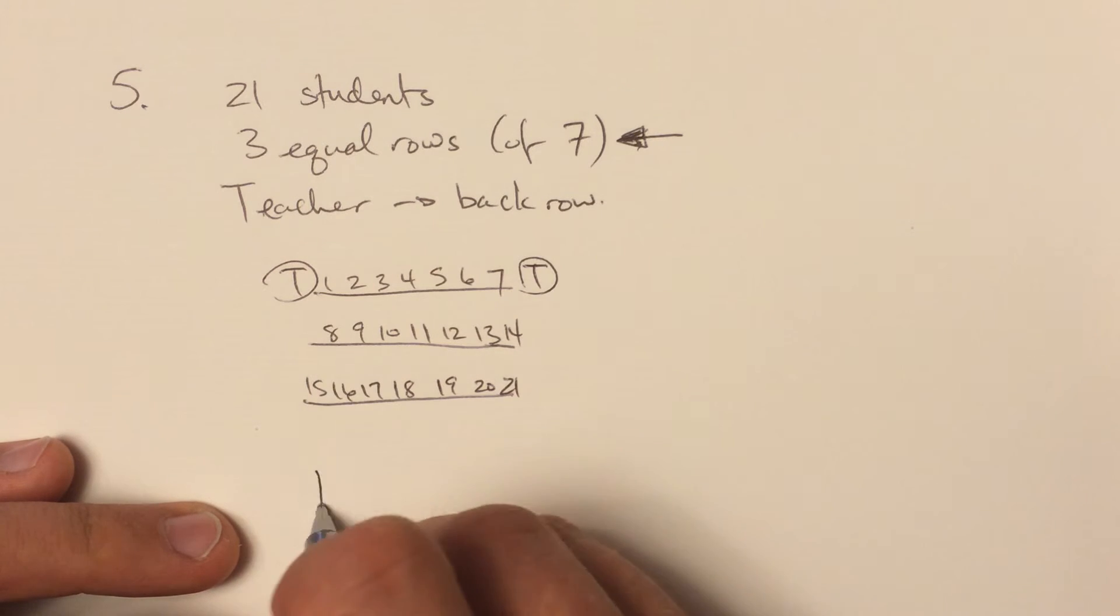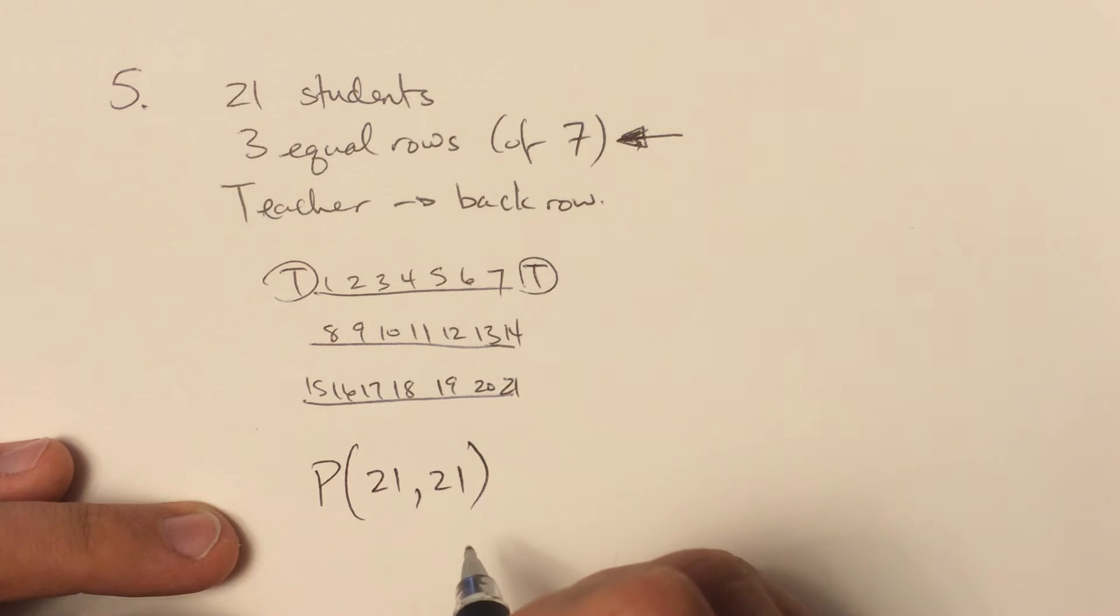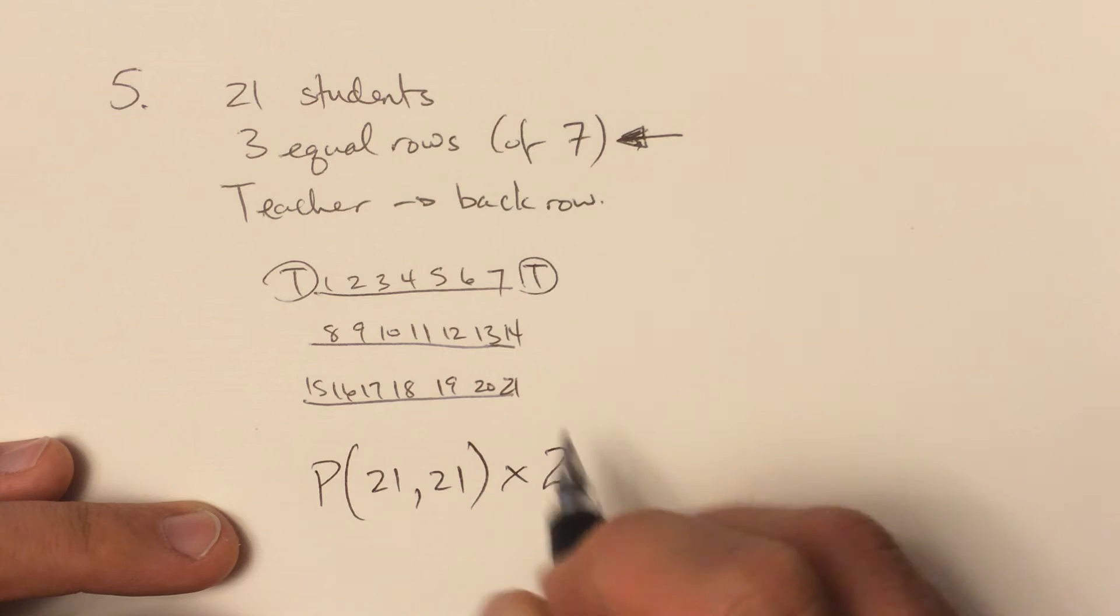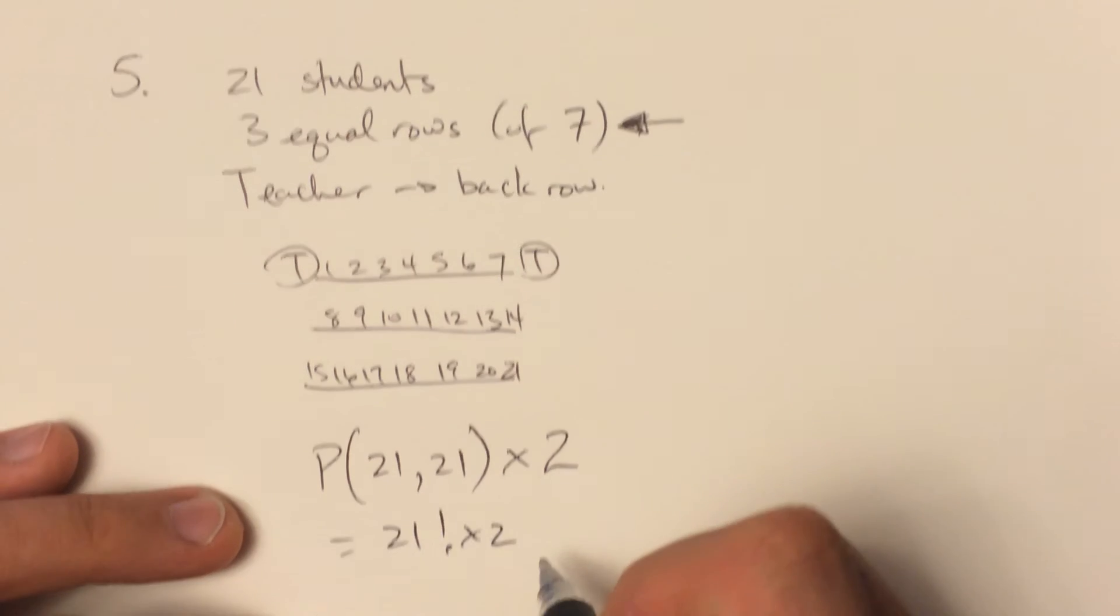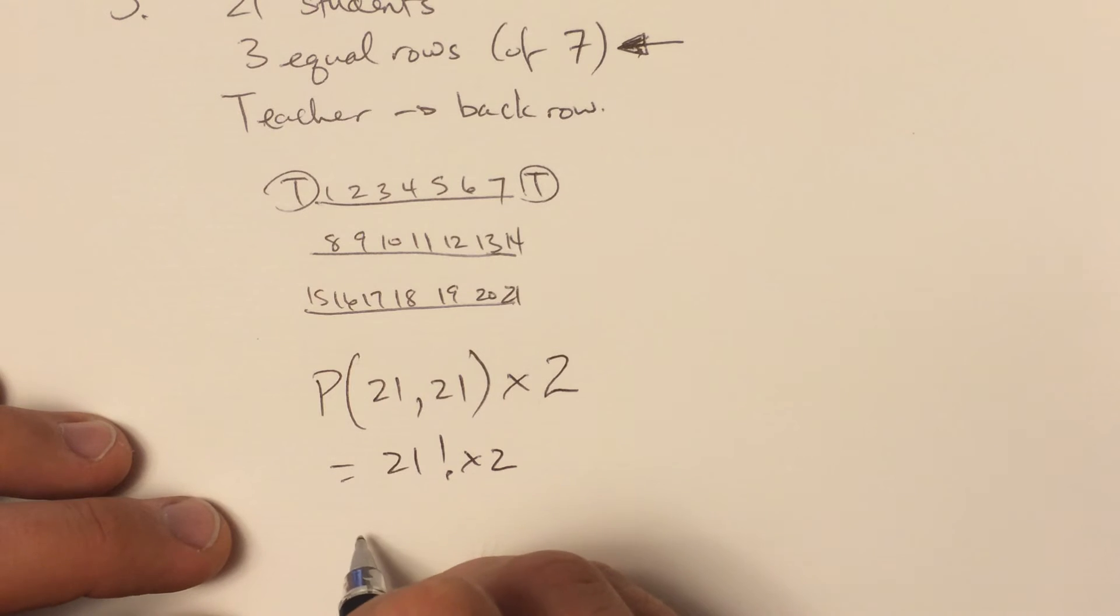So really, all we have is we're going to do a permutation. We have 21 students to place in 21 positions. And then we have two positions to place the teacher. So that's just 21 factorial times two, which is a gigantic number.